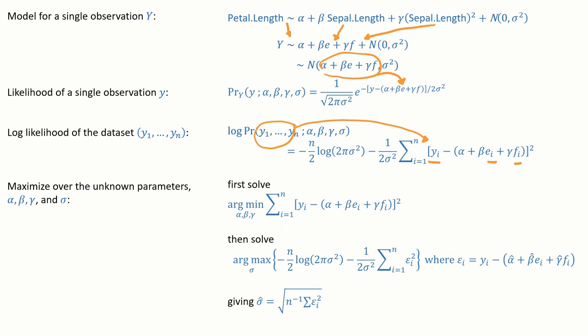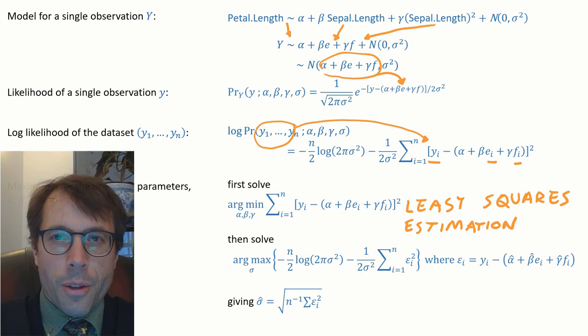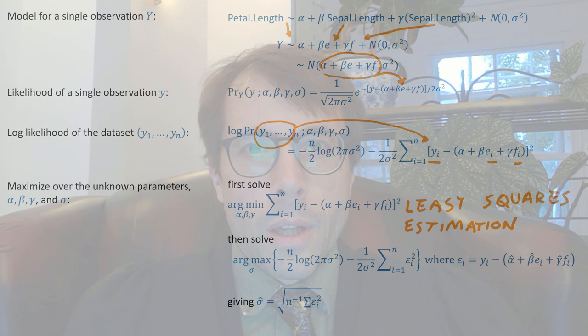I skipped over how we actually do the minimization over alpha, beta and gamma. What matters is that minimization over alpha, beta and gamma is exactly least squares estimation of alpha, beta and gamma. In other words, maximum likelihood estimation gives exactly the same estimates as least squares estimation. And there are fast algorithms solving least squares estimation from linear algebra. In particular, there's Gaussian elimination, yet another invention from Gauss, the prince of mathematicians.